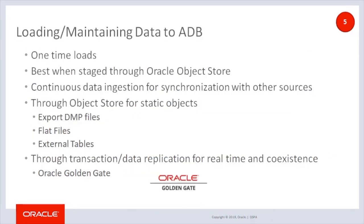Loading and maintaining data in the Autonomous Database can be done as one-time loads, best when staged through Oracle Object Store, or as a continuous data ingestion for synchronization with other sources. Autonomous Database supports three object stores and can read and write directly to these three: Oracle Object Store, Amazon S3, and Azure Object Store. Object stores are ideal for staging export dump files that are going to be imported into the Autonomous Database. The same applies for flat files that will be loaded into the database. Autonomous Database supports the Oracle database external tables feature, so flat files on object store can act as Autonomous external tables. It is best to host these tables on Oracle Object Stores that are fast-connected to the Autonomous Database to reduce latency and other issues around access time to database objects.